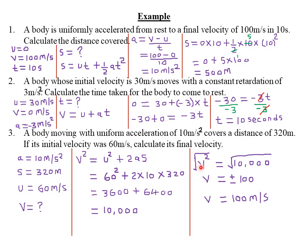Since the body is uniformly accelerating, we use the positive form. Substituting: v squared = 60 squared + 2(10)(320) = 3600 + 6400 = 10000. Taking the square root of both sides: v = ±100 m/s.